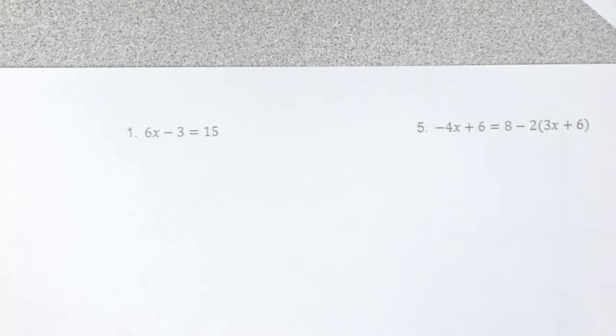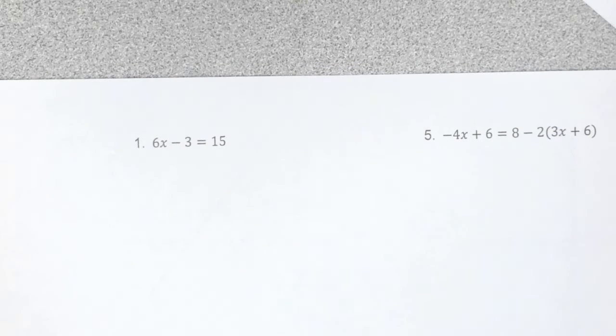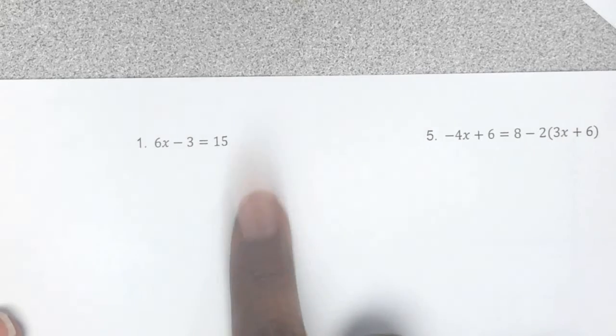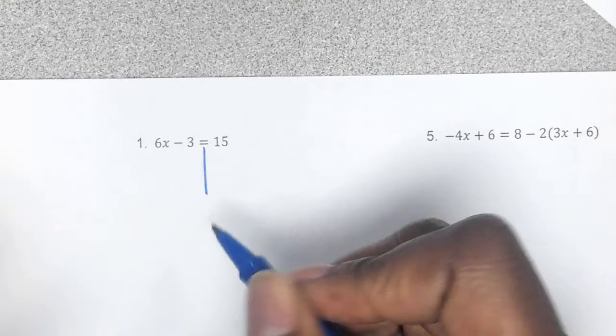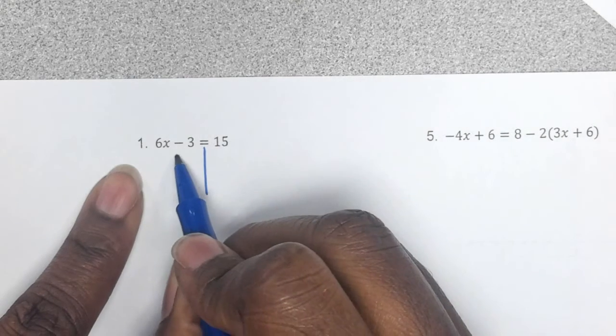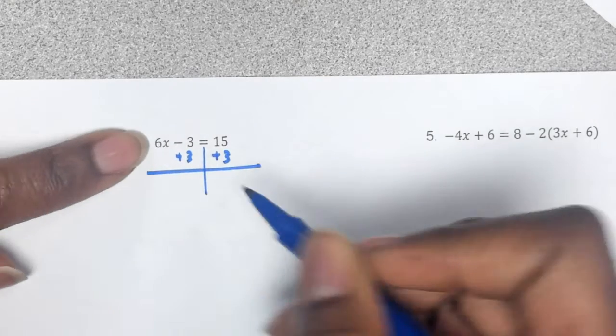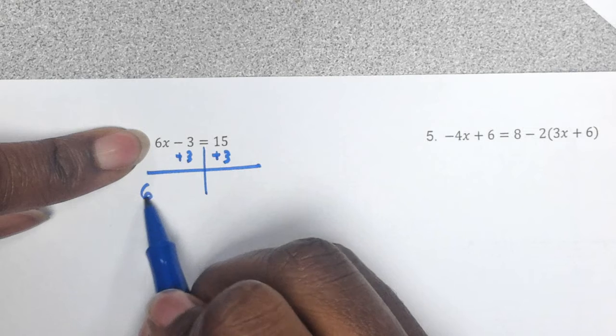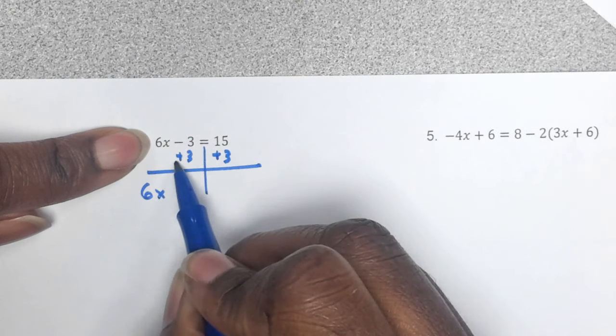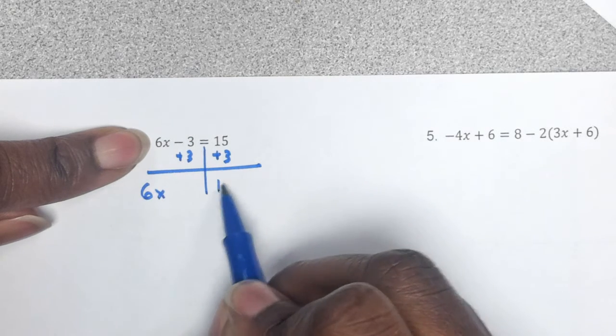When you're solving these, I wish it would say solve for x or find the solution of x. I'm going to do it the long way just right now. We're going to add 3 over here, right? Because we're trying to get x by itself. So we have 6x, this is zeroed out, 15 plus 3 is 18.